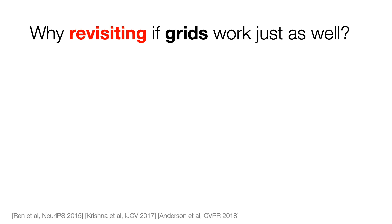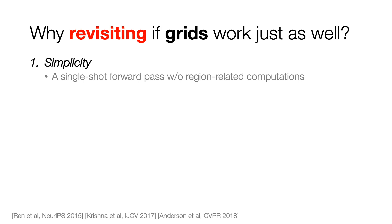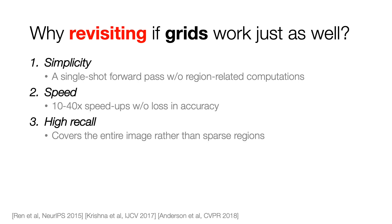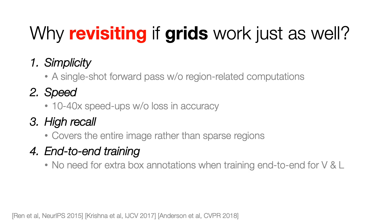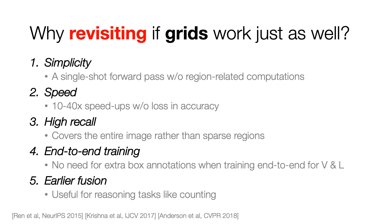But then why do we want to revisit grid features if they are just working equally well? First, they are simple — just one feed-forward path — and therefore can run much faster. It also naturally offers high recall and coverage because it gives outputs everywhere in the image. It is also easy to do end-to-end training, whereas one likely needs extra bounding box annotations with regions. And finally, it also allows us to explore fusion in earlier stages of the vision pipeline, and we find it useful for counting. Overall, grid features are a promising alternative to regions.